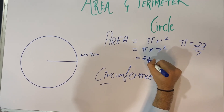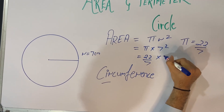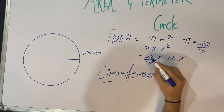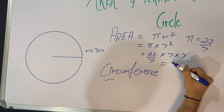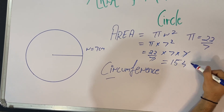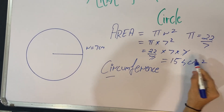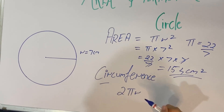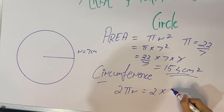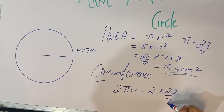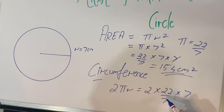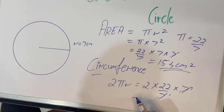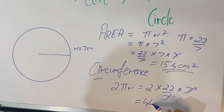So area = pi into 7 square. Pi is 22 upon 7 and 7 into 7; we can reduce 7 and 7, giving 22 into 7 which is 154 centimeter square. The formula of circumference is 2 pi r, which is equal to 2 into 22 upon 7 into 7. We can reduce 7 and 7, so 2 into 22 is 44 centimeter.